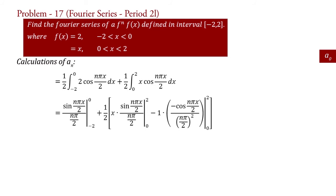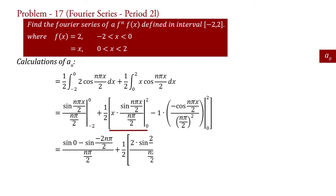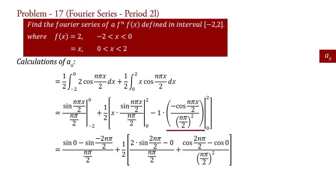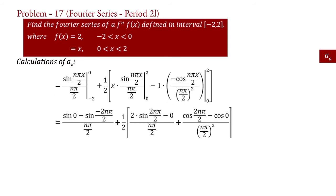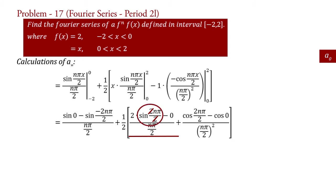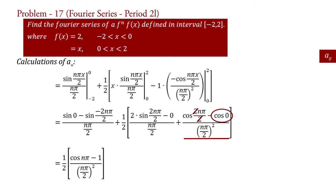Putting the values of limits: sin 0 equals 0 and sin(minus n pi) equals 0, so the first term is 0. The 2's cancel and sin(n pi) equals 0, so the second term is also 0. The 2's cancel and cos(0) equals 1. Therefore the remaining part of the equation is an equal to 1 upon 2 into (cos(n pi) minus 1) upon (n pi by 2) squared. Transferring the denominator: an equal to 1 half into 4 upon (n squared pi squared) into (cos(n pi) minus 1). Therefore an equal to 2 upon (n squared pi squared) into (cos(n pi) minus 1).